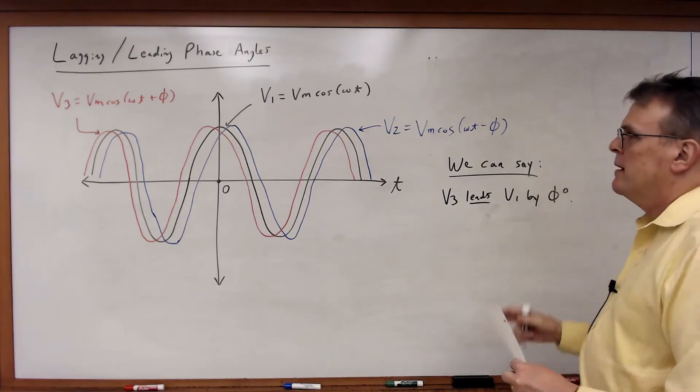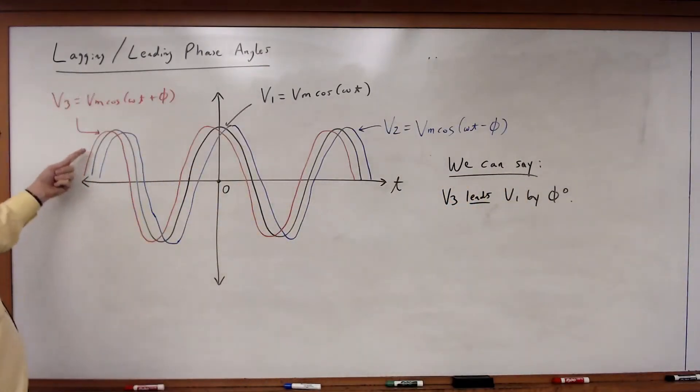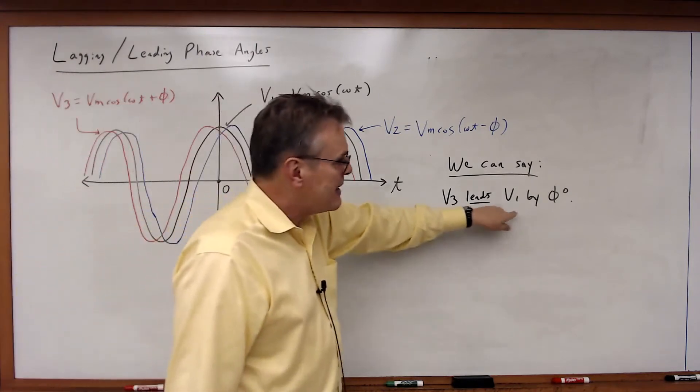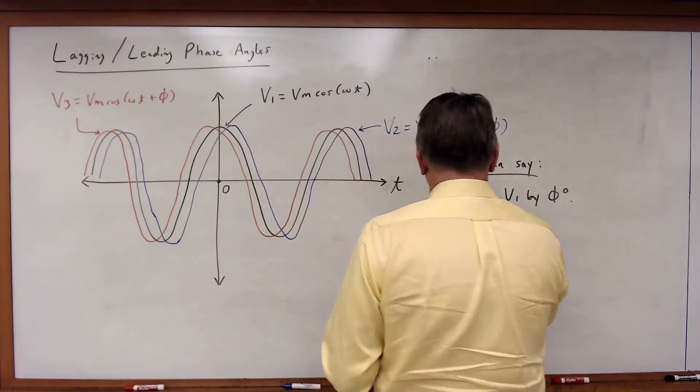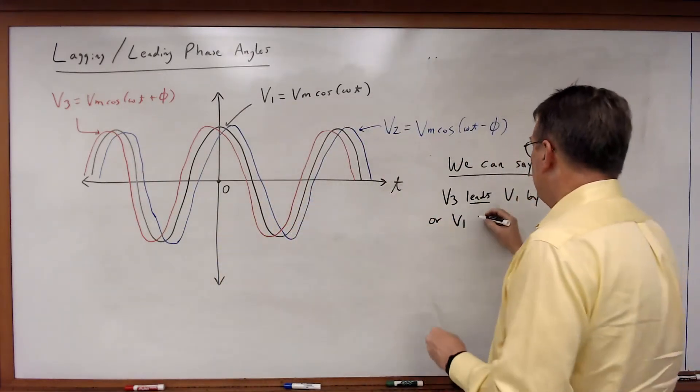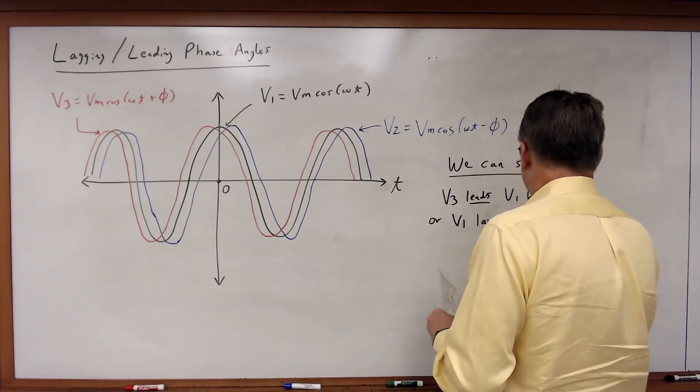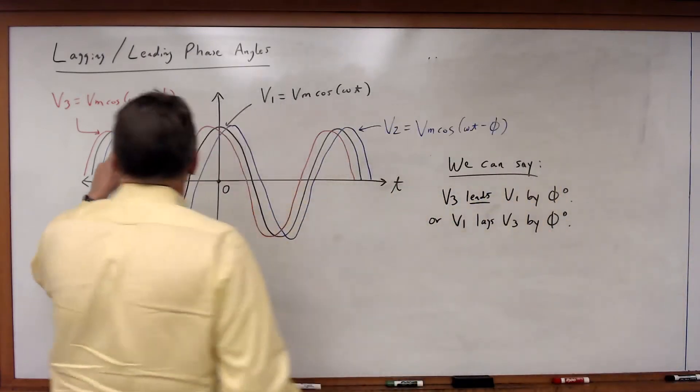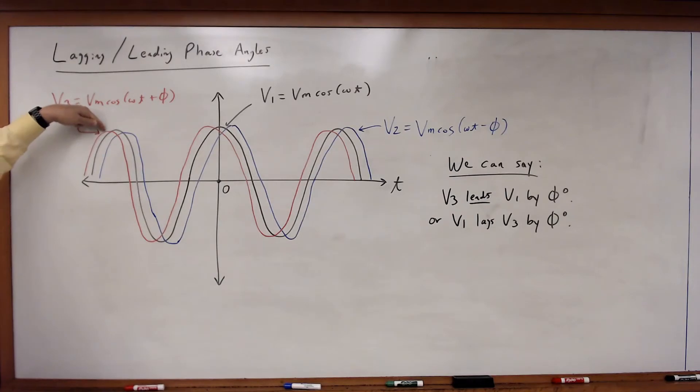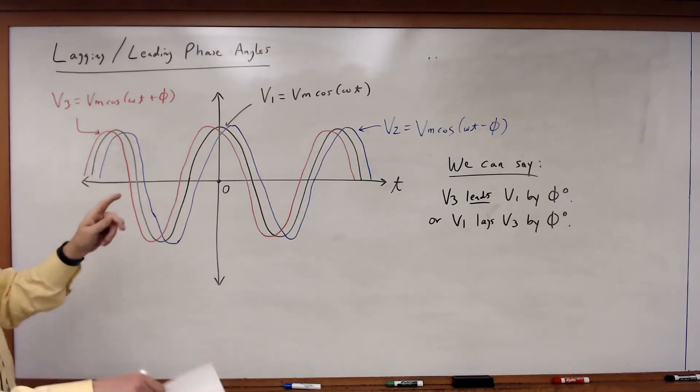What we mean by that is v3 reaches its peak value before v1 does, so it gets there first then v1 follows. So v3 leads v1. We can also say that v1 lags v3 by φ degrees.